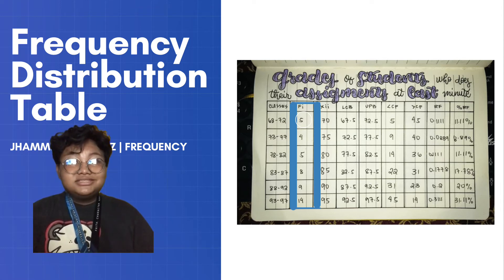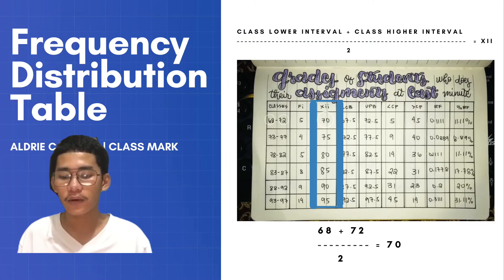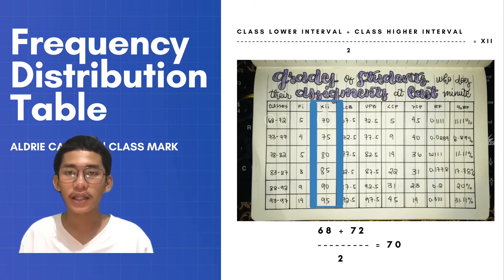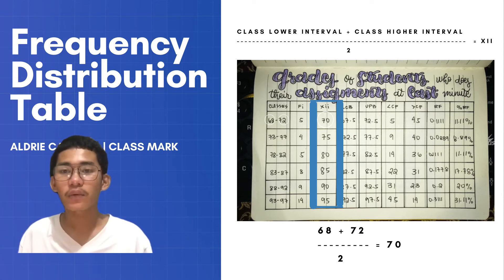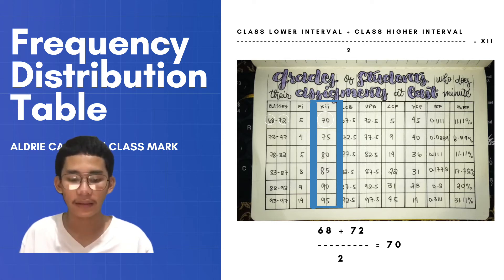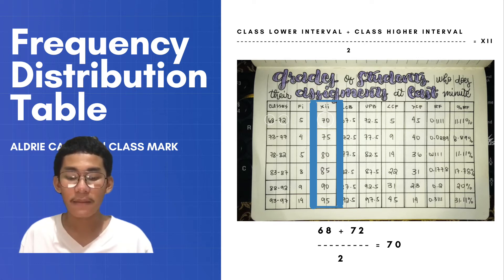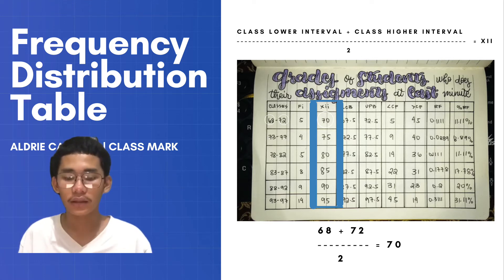After we know how to gather classes and frequencies, we must proceed to getting the class mark. In order to get the class mark, we need to add the lower interval and the higher interval, then divide the sum by 2. In getting the class mark of our first class, 68 is the lower and 72 is the higher interval. 68 plus 72 is equal to 140; 140 divided by 2 is equal to 70. Class marks are essentially the average of the lower and upper class interval. You will do the same for the others.